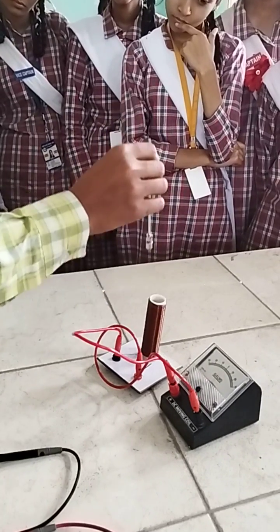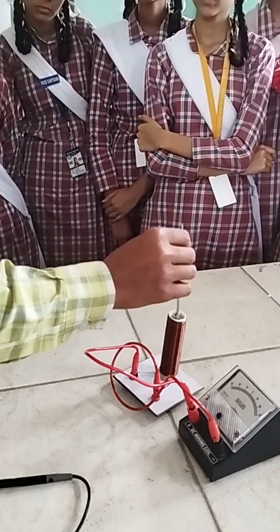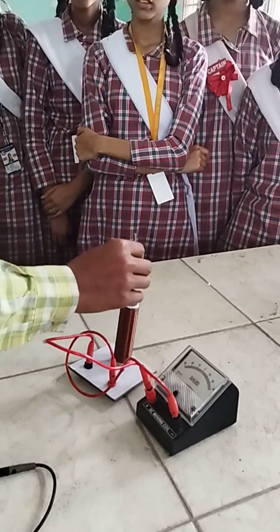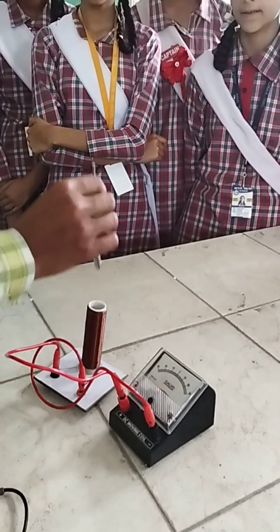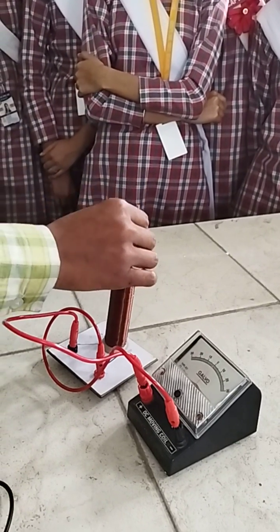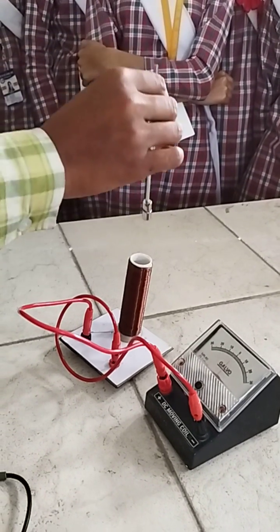Only one care should be taken - it should be closed so that you provide the path for the current flow. So whenever there is a change in the magnetic flux linked with the coil, what happens? You see some deflection in the galvanometer.